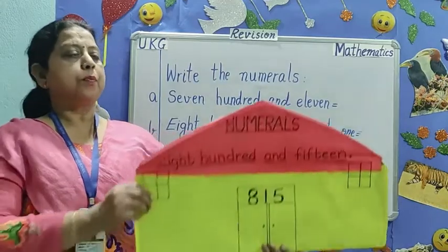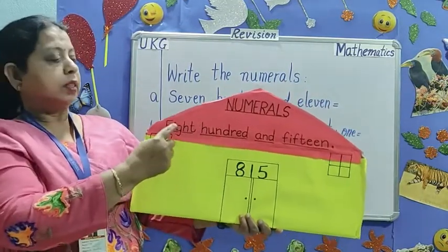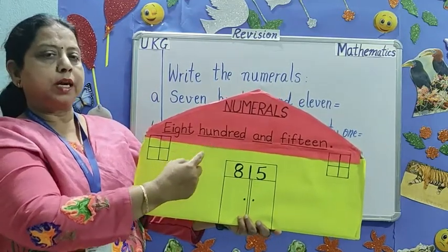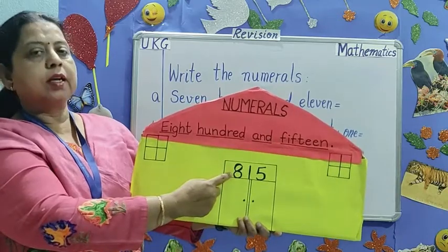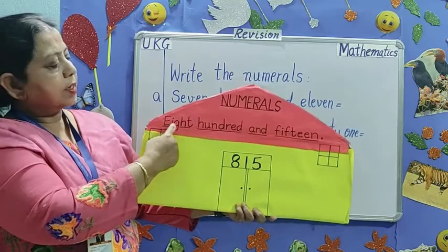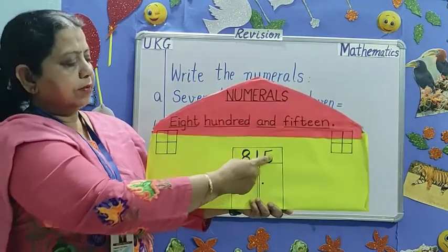Our second topic is numerals. In this house, the number is written in words. We have to write the number this way. That is called numerals. 815.